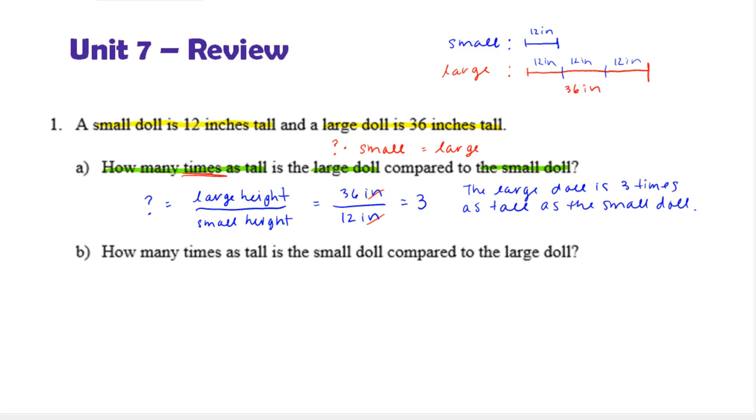Let's look at the next one. Here we want to reverse the direction. How many times as tall is the small doll compared to the large doll? So, this is inverting the relationship, where now we want to see what fraction of the large doll is the small doll. We'll write it as the small height divided by the large height. And that's 12 inches over 36 inches. Notice the inches cancel. And this will reduce as a fraction. They each have a common factor of 12, and this is 1 third. So, the small doll is 1 third times as tall as the large doll.